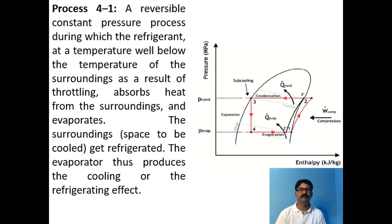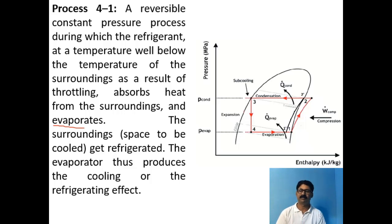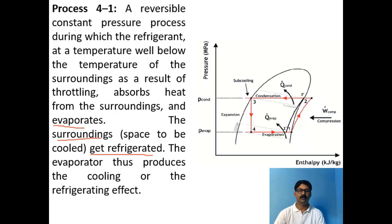Process 4 to 1 is a reversible constant-pressure process wherein the refrigerant, at a temperature well below the space to be cooled, absorbs heat from the space and evaporates — that is why the component is called the evaporator. The refrigerant enters below the temperature of the space to be cooled, absorbs heat from the compartment, and gets evaporated, thereby refrigerating the space. Thus the evaporator produces the cooling or refrigerating effect — actual cooling takes place in the evaporator.